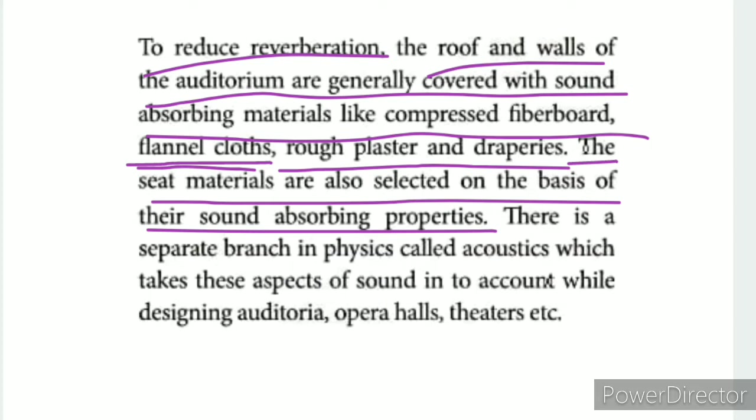To control reverberation, the roof and walls are covered with sound-absorbing materials such as compressed fibre, flannel cloths, rough plaster, and draperies. There is a separate branch in physics called acoustics which takes these aspects of sound into account while designing auditoria, opera halls, and theatres. Without absorbing material, the music would be dull. Acoustics helps design better auditoriums, cinemas, and theatres.